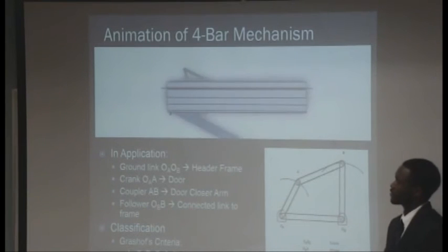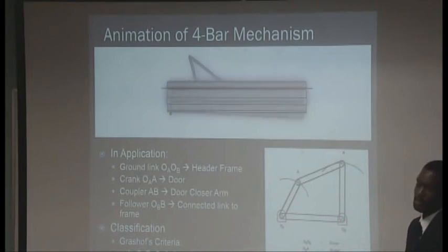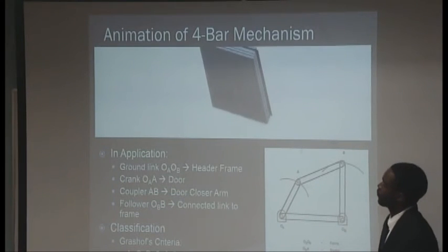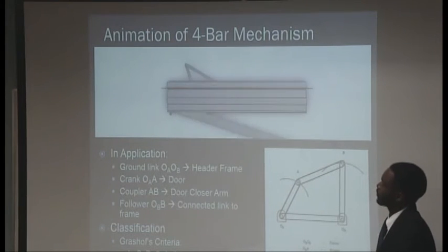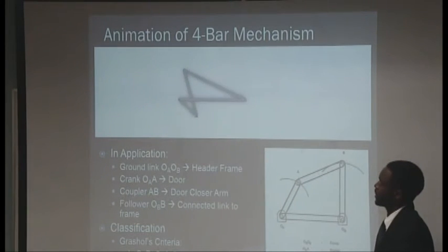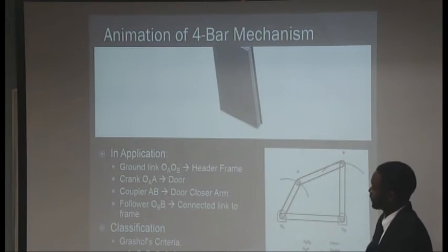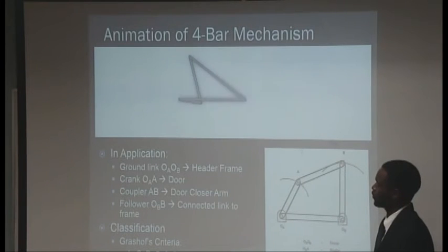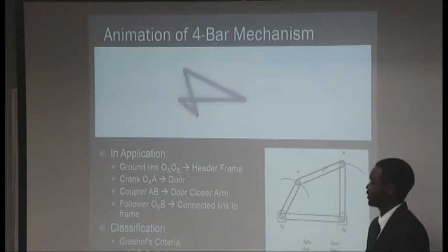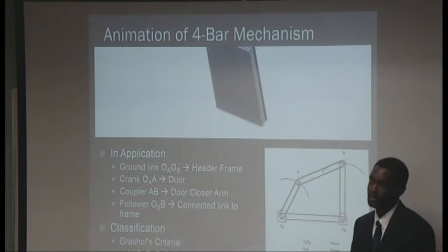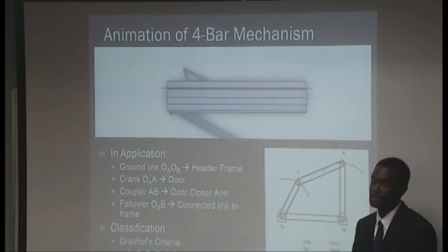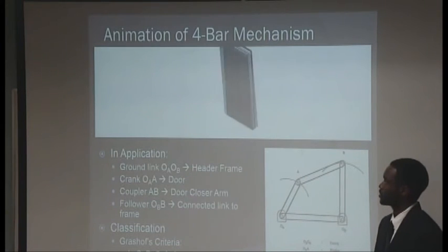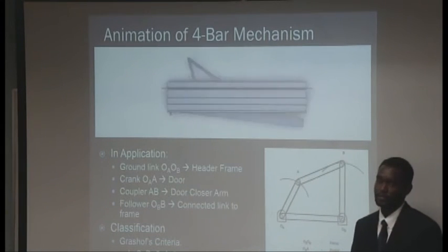One of the four-bar mechanisms that we synthesized, we found that it is well-suited for application of a door closer. As you can see, we have an animation showing that the four-bar mechanism provides that swinging motion that's needed for a door closer. The ground length would serve as the header frame. The crank would serve as the door. The coupler would be the door closer arm. And the follower would be the connected link to the frame. The classification based off of Grashov's criteria of this four-bar mechanism is a crank rocker. Now, Frank will continue on and discuss the crank slider mechanism.